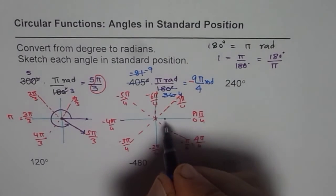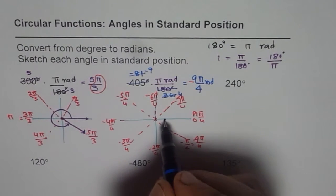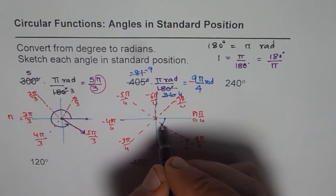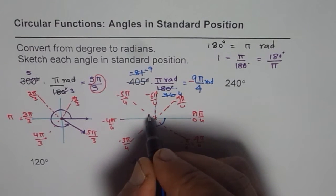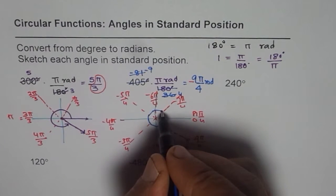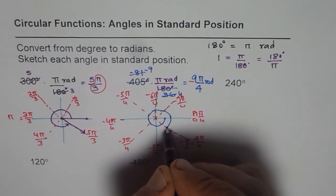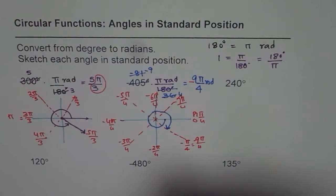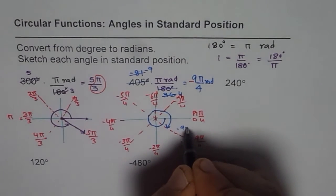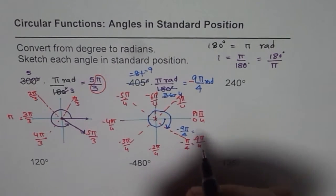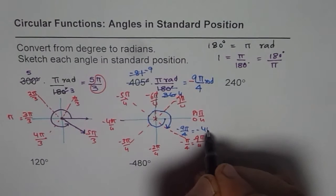So what really happened was, we started from here. 9 pi by 4. You have to move, since it is negative, clockwise. 1, 2, 3, 4, 5, 6, 7, 8, and 9. So there you are. So this is minus 9 pi by 4, or you could say minus 405 degrees.